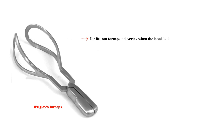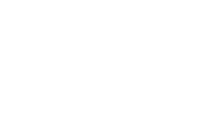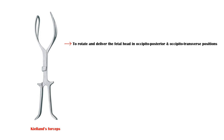Wrigley's forceps are used for lift-out forceps deliveries when the head is 2 cm below the ischial spines, and to deliver the fetal head during caesarean section. Finally, Kjelland's forceps are used to rotate and deliver the head in occipito-posterior and occipito-transverse positions, and to deliver the aftercoming head of breech presentation.